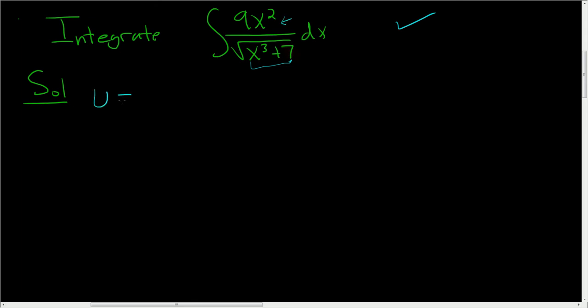So let's try it. Set u equal to x cubed plus 7, and so du is 3x squared dx. All right, we have a 9x squared, so we'll just multiply both sides by 3. So 3 du, 3 times 3 is 9, so you get 9x squared dx.